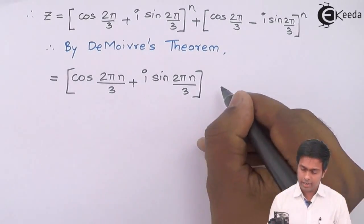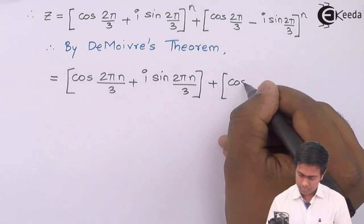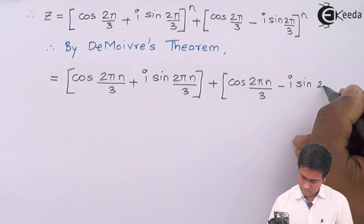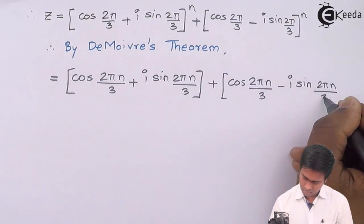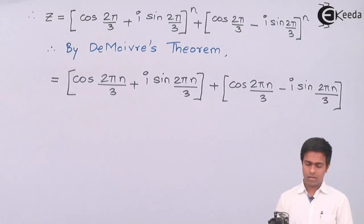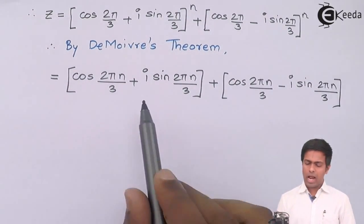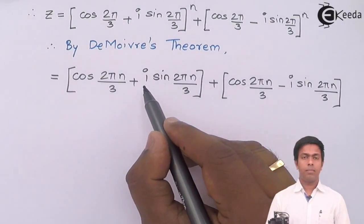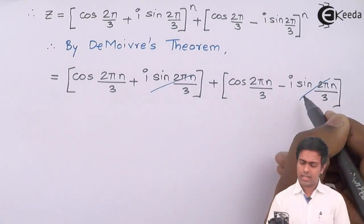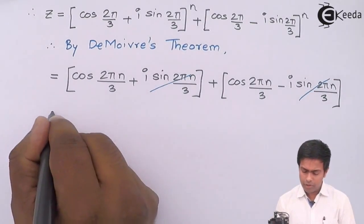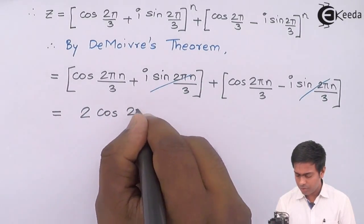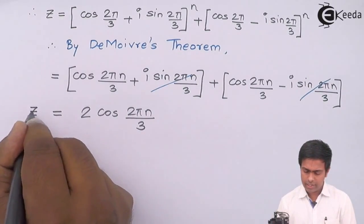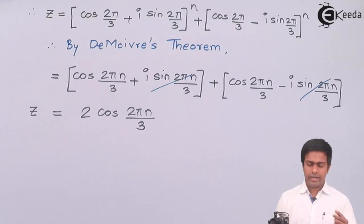Adding the two terms, the sine parts cancel (one positive, one negative), leaving Z = 2·cos(2πn/3). This is our simplified expression for Z, but we still need to verify the required values of -1 and 2 under the given conditions.